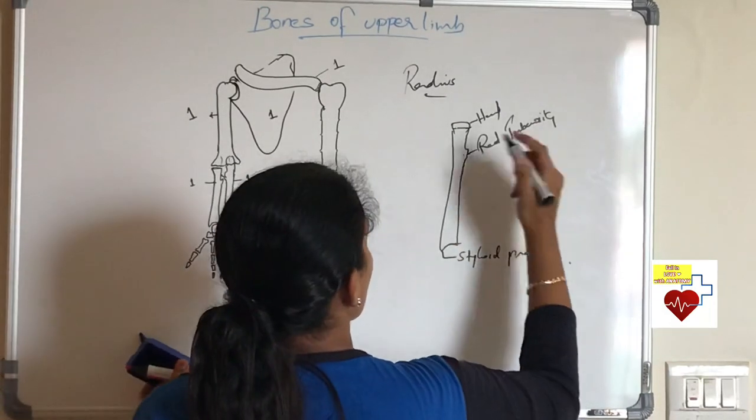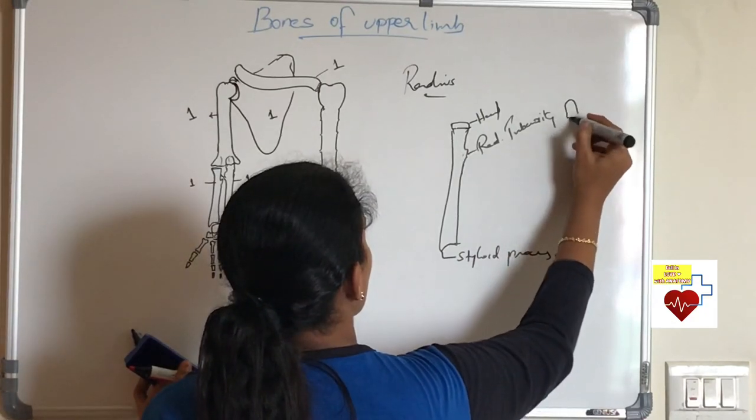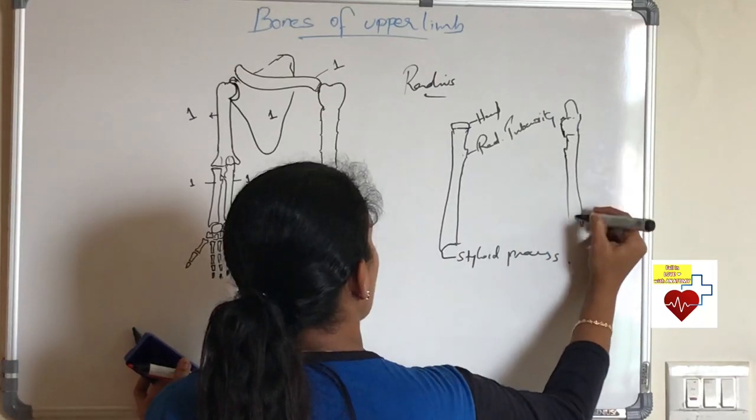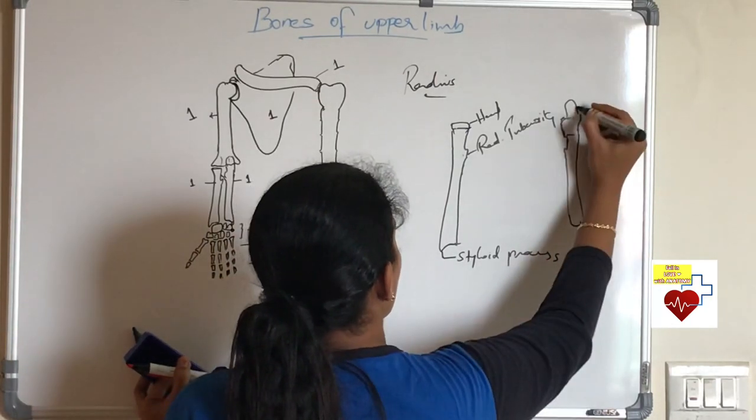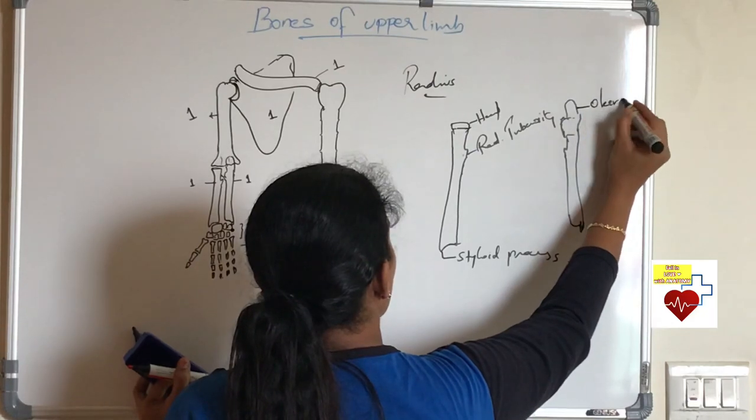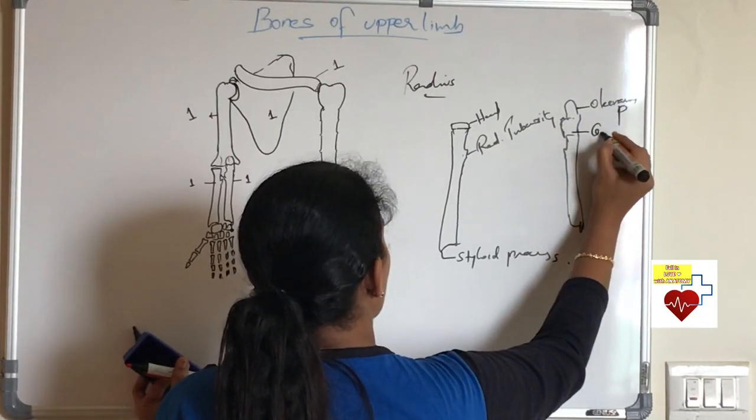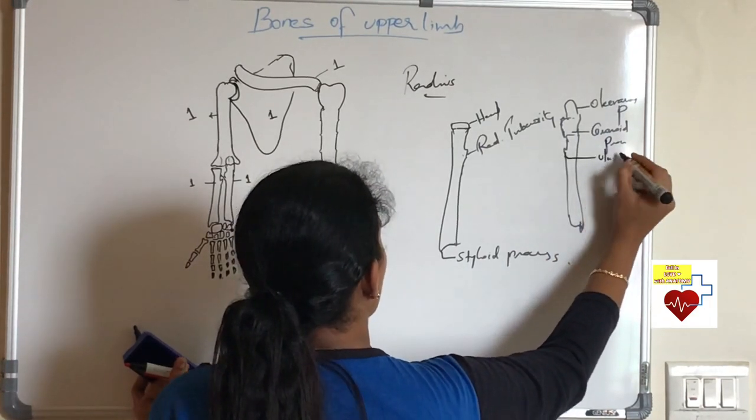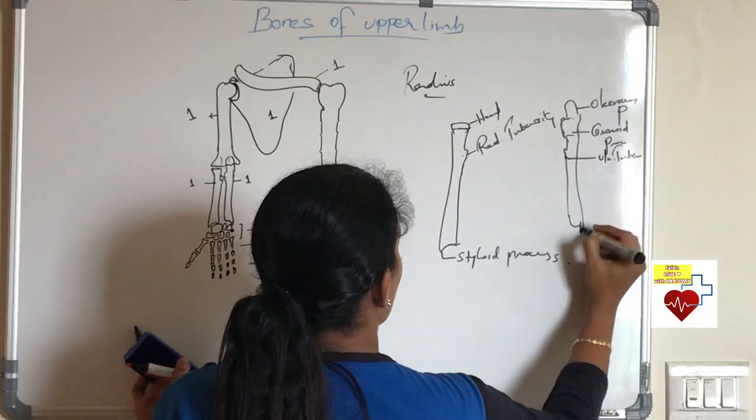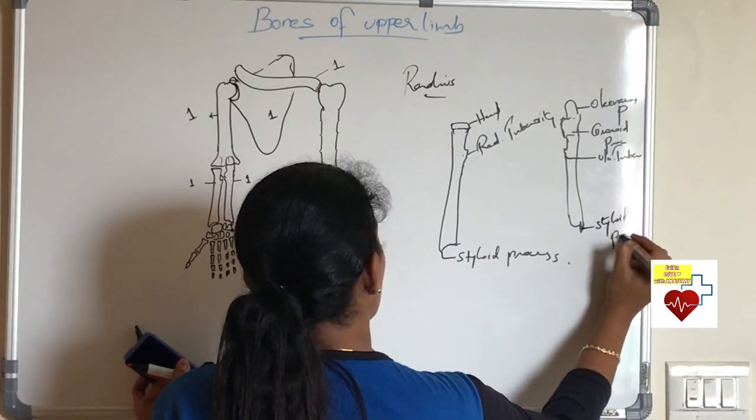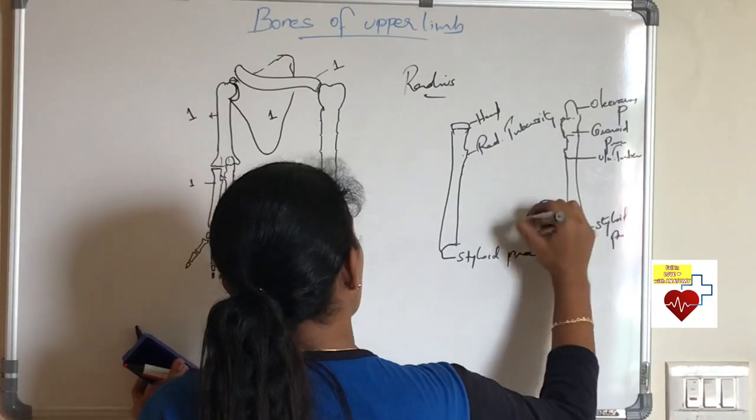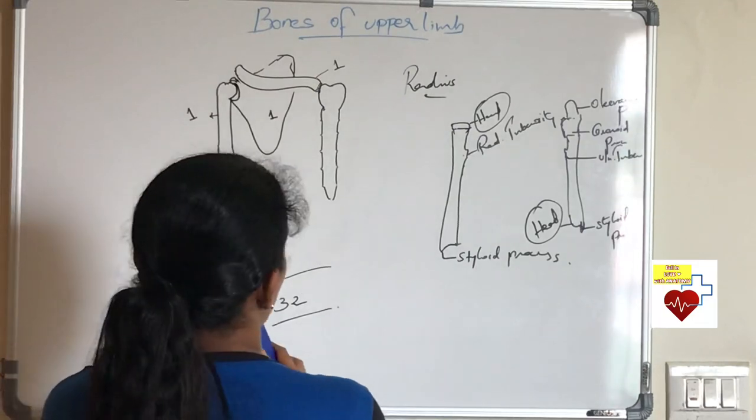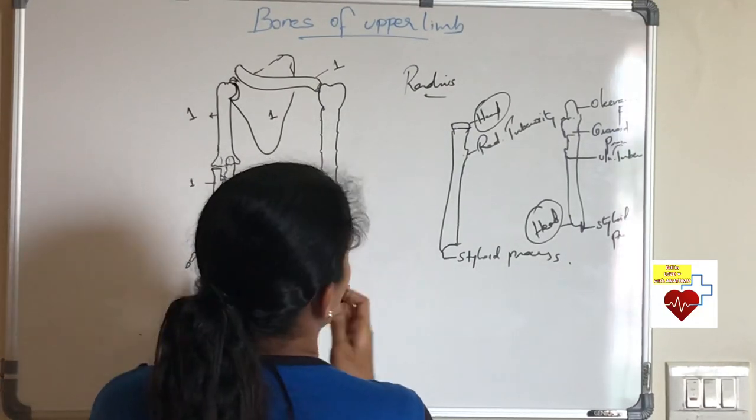What is the other forearm bone? It is ulna. Head is present in the upper end of radius, while in the ulna head is present in the lower end. What is that projection? It is olecranon process which articulates with the olecranon fossa of humerus. And beneath that we have coronoid process. Then we also have ulnar tuberosity like radial tuberosity. Beneath, lower down you have styloid process. Note down: in ulna the head is lower down, radius head is in the upper end.